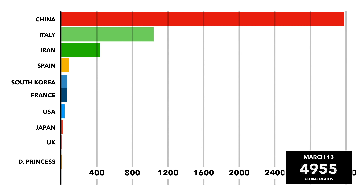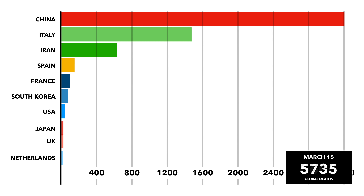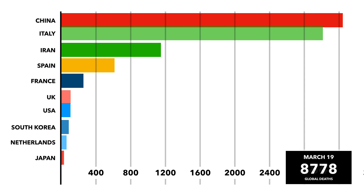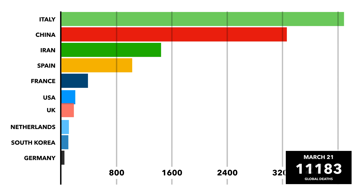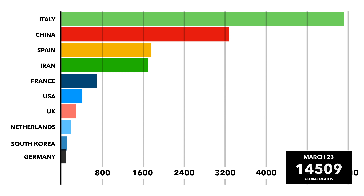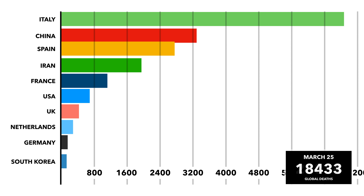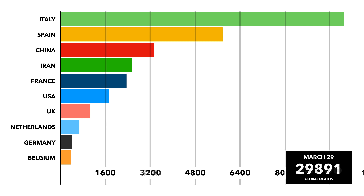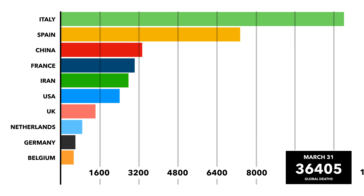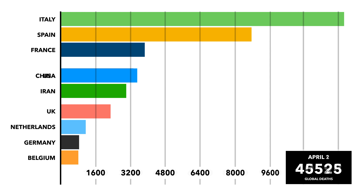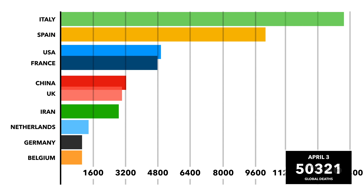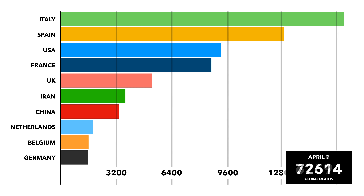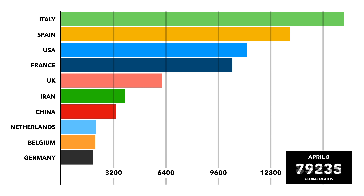The middle of March saw a major surge in Italy, and with China's death rate stagnating, Italy quickly became the country with the highest death toll. Around the same time, other European nations, most notably Spain, France and the UK, also began to see death tolls surge. At the beginning of April, the extent of the virus's hold in the US also became obvious, with the country rapidly catching up with the European nations which had once suffered the most.